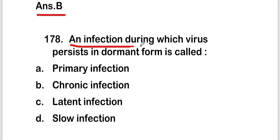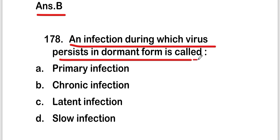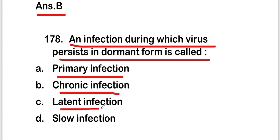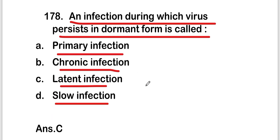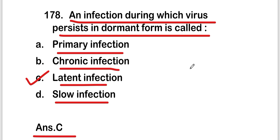Next question: an infection during which a virus persists in a dormant form is called — primary infection, chronic infection, latent infection, or slow infection. The right answer is option C — latent infection. So the infection during which a virus persists in dormant form is called latent infection.